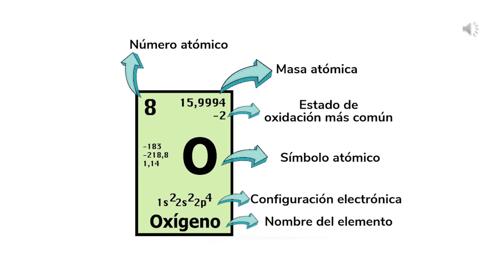Podemos ver que la tabla periódica nos brinda mucha información de cada uno de estos elementos, incluyendo configuración electrónica, entre otros aspectos más. Propiedades y características que hacen único a cada uno de ellos.